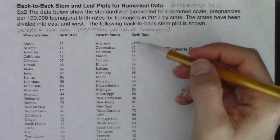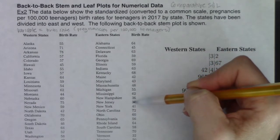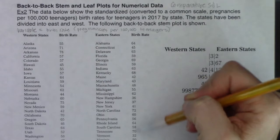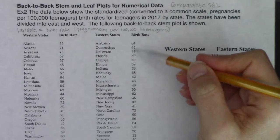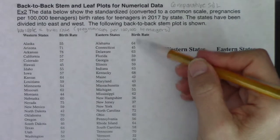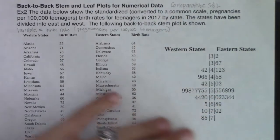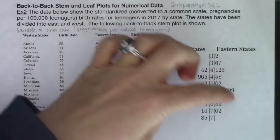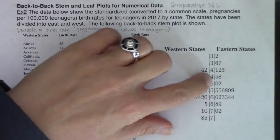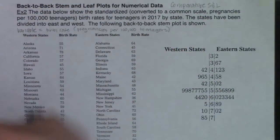Looking over on the eastern half of the country, we're down at 37 for New Jersey, and Vermont is at 32. If we look at this back-to-back stem and leaf plot through the lens of a teacher, the first thing I would note is there was no key — I don't know what these numbers stand for — and there's no title.